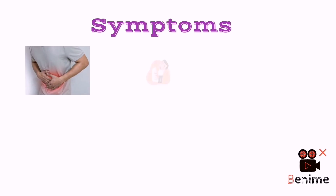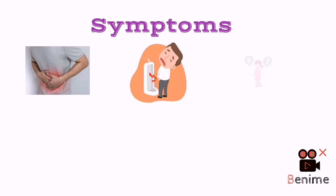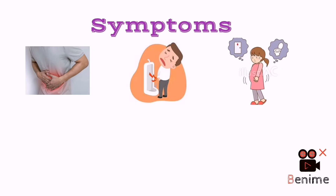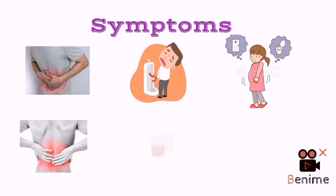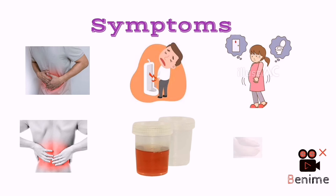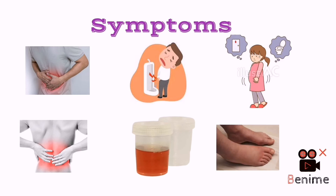Symptoms felt by the patient having a high count of RBCs in urine include abdominal pain, painful urination, frequent urination, back pain, pink or red color of urine, and swelling of legs, etc.